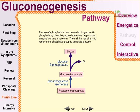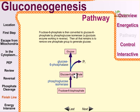Fructose-6-phosphate is then converted to glucose-6-phosphate by phosphoglucose isomerase, which is also a glycolysis enzyme working in reverse. Then all that remains is to remove the phosphate group to generate free glucose. This step also faces a highly negative ΔG in the forward glycolysis direction, so instead of reversing it, the enzyme glucose-6-phosphatase cleaves the phosphate from glucose-6-phosphate, producing free glucose.